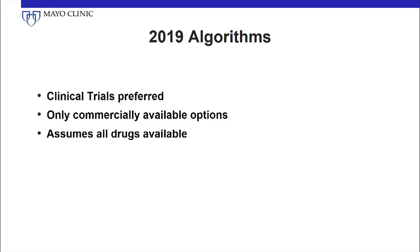So in any situation — whether it's newly diagnosed, maintenance, consolidation, or relapse — try and see if there is a clinical trial available. Clinical trials are always preferred over any of the algorithms that I'm going to show. What I'm showing is mainly assuming that if you have access to the drugs we are talking about, what would you do in the ideal circumstance? And I'm using only commercially available options.